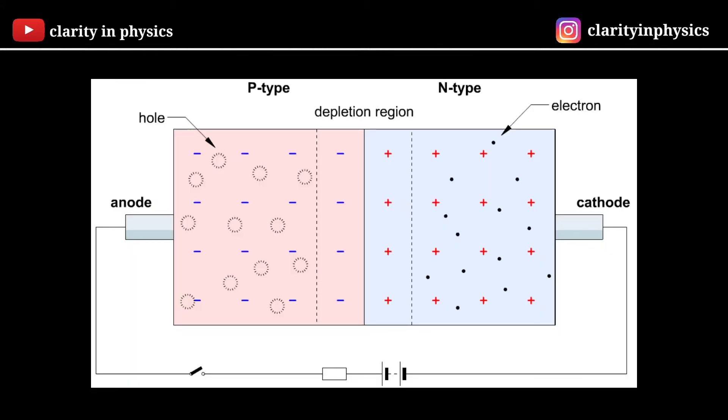As we know that electrons are the majority on N-side and holes are the majority on P-side. When a P-N junction is initially formed, the electrons and holes on either side of the junction will recombine with each other. The electrons diffuse from N-side to P-side and the holes diffuse from P-side to N-side.